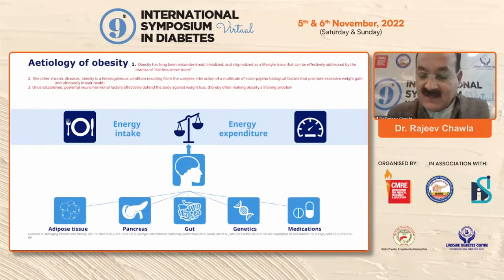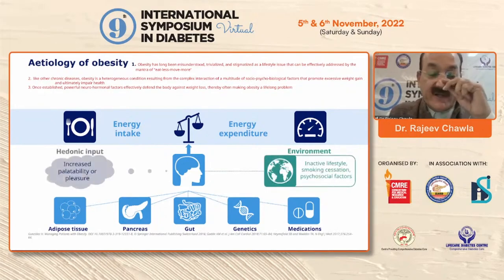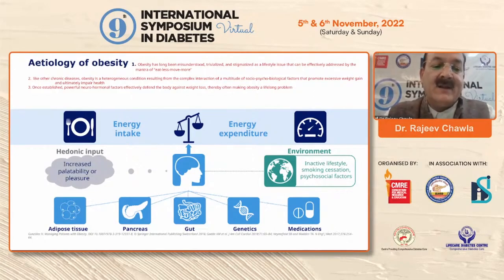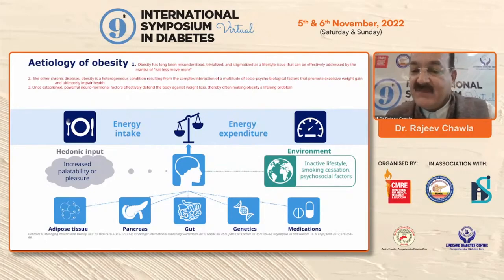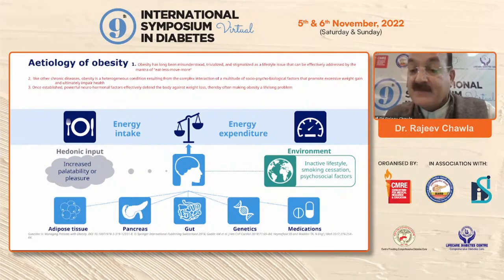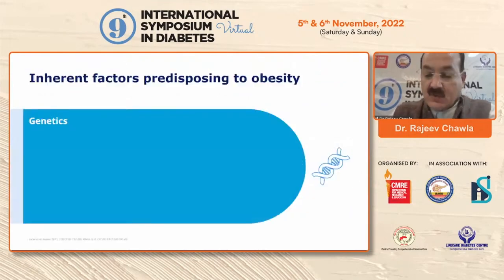This is what I heard Neeta talking about — why don't we have continuous weight loss on the same drug, the same program, the same structured exercise? Because in spite of all those programs, neuro-hormonal factors and behavior make sure that you don't lose weight further. This comes as a result of inputs from the gut, genetics, medication, and adipose tissue. So it is the hedonic input — pleasure eating — which is very important, as well as environmental behavior, physical inactivity, an inactive lifestyle, and when you stop smoking, there is unfortunately an increase in appetite.